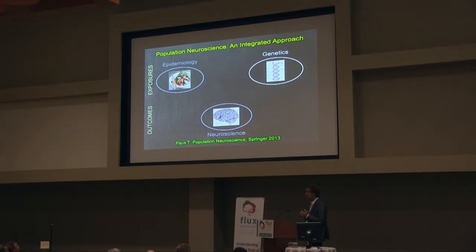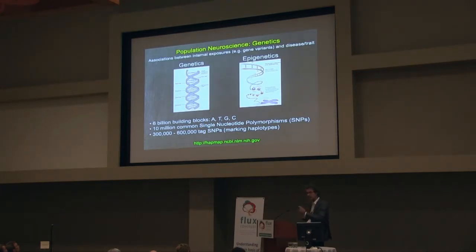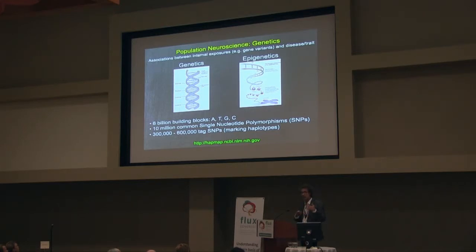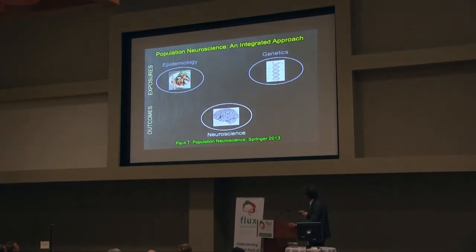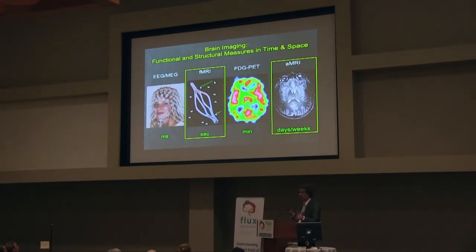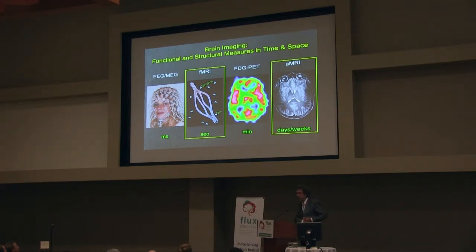Genetics comes in for many reasons, but one is that it allows us to get at some of the mechanistic pathways. We use different types of genetic variations, including variations in the state of the genes — methylation, acetylation state, epigenetics — which tells us about the probability of gene expression. And of course, neuroscience, in particular imaging, provides us with a wonderful tool to get quantitative phenotypes. Functional imaging is important, but structural images are equally important because they provide a window into the history of an individual.